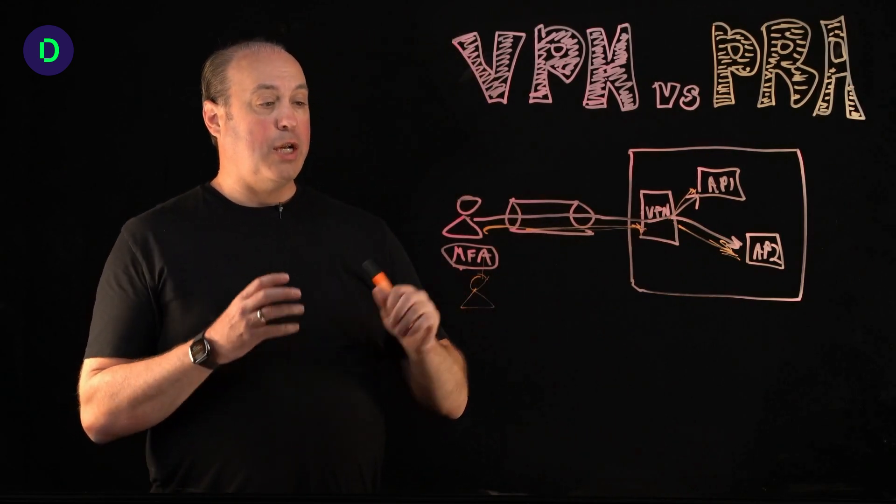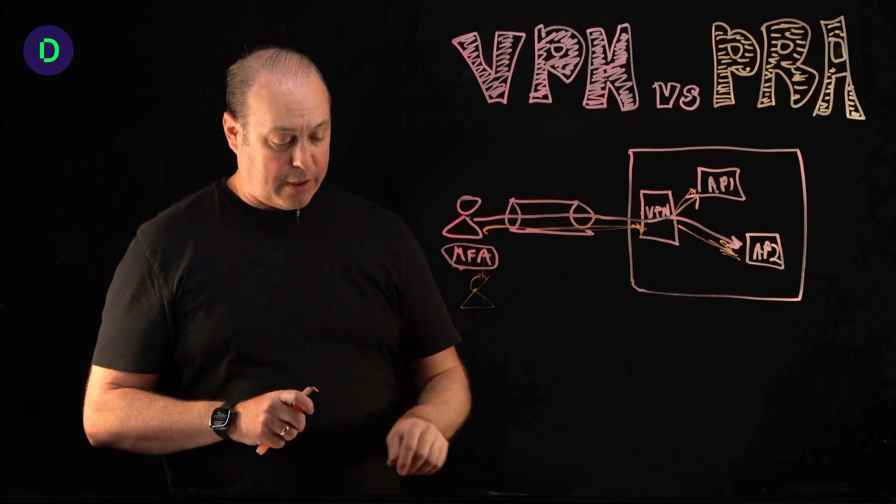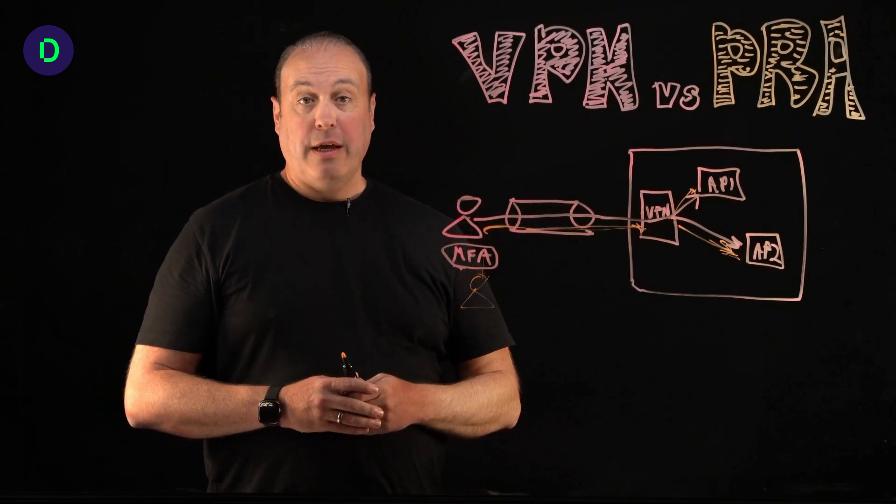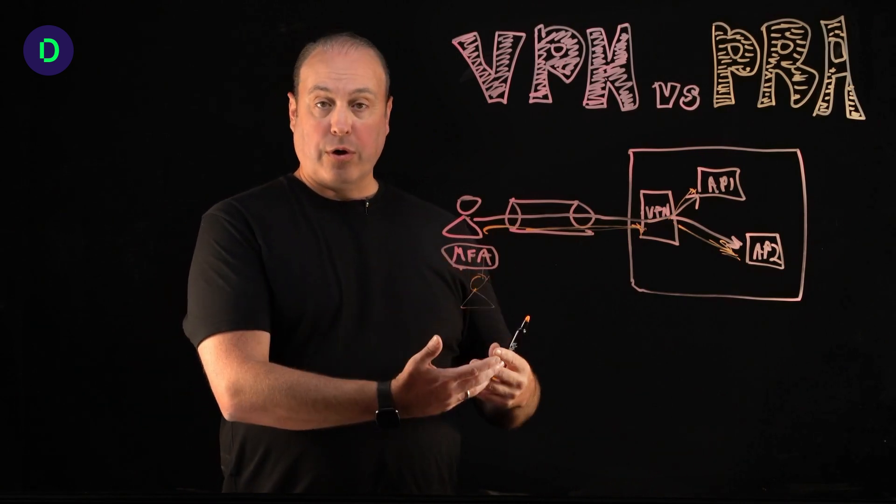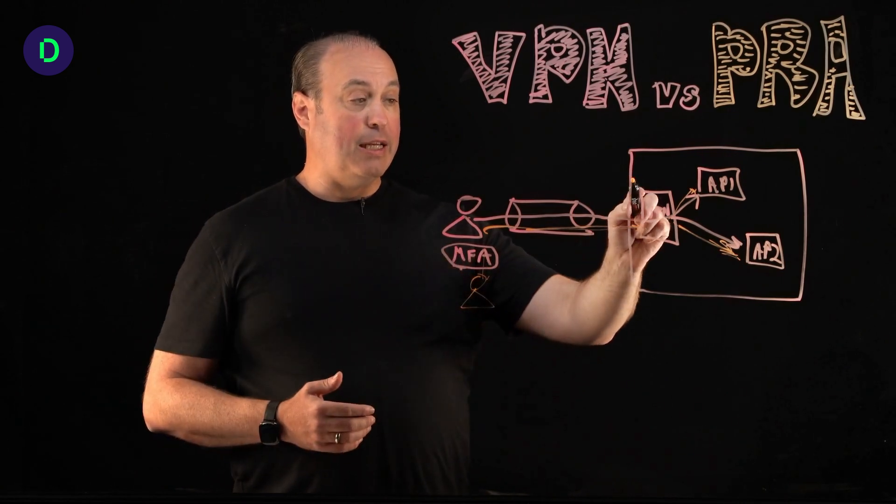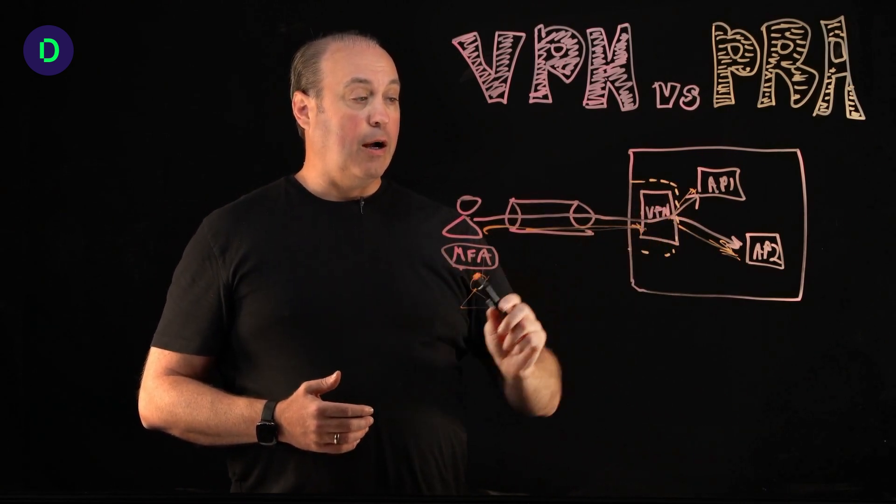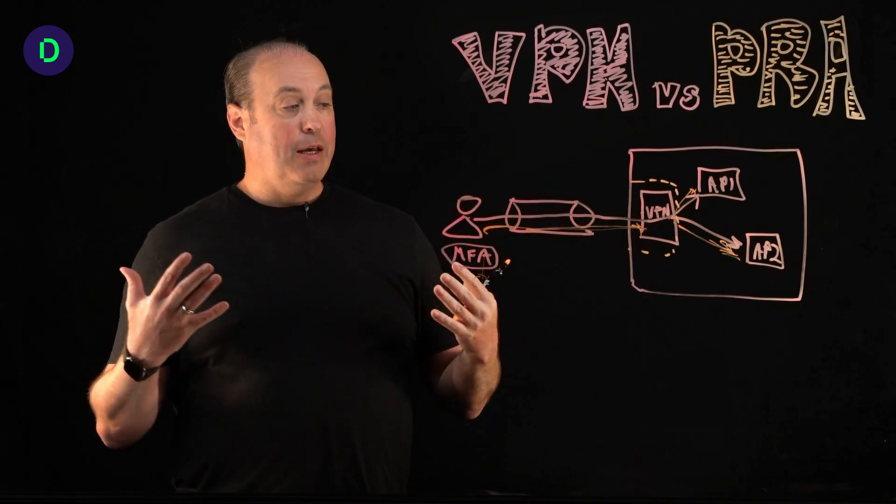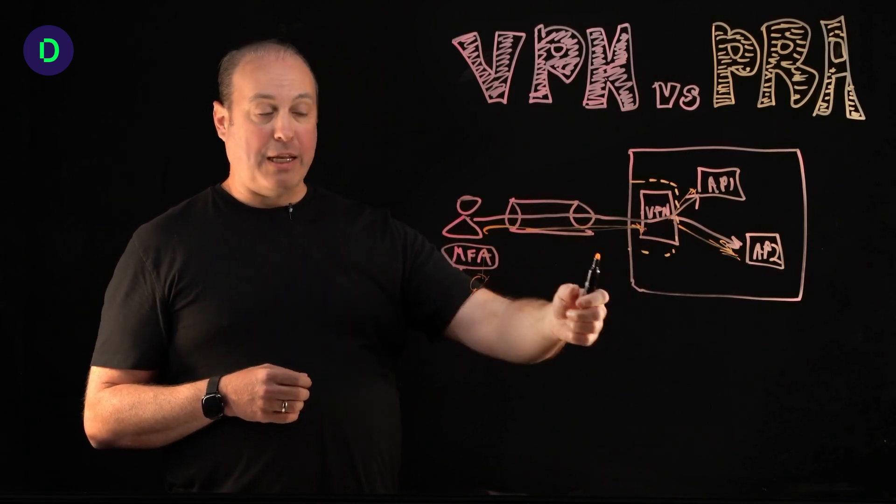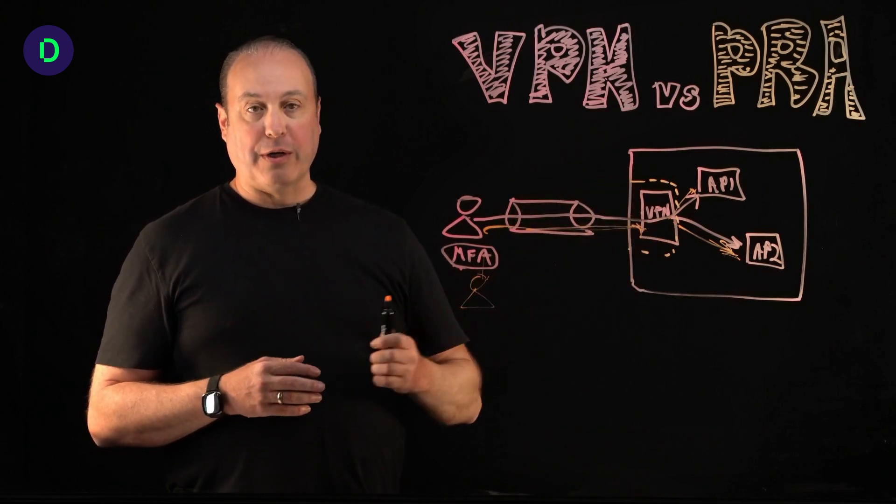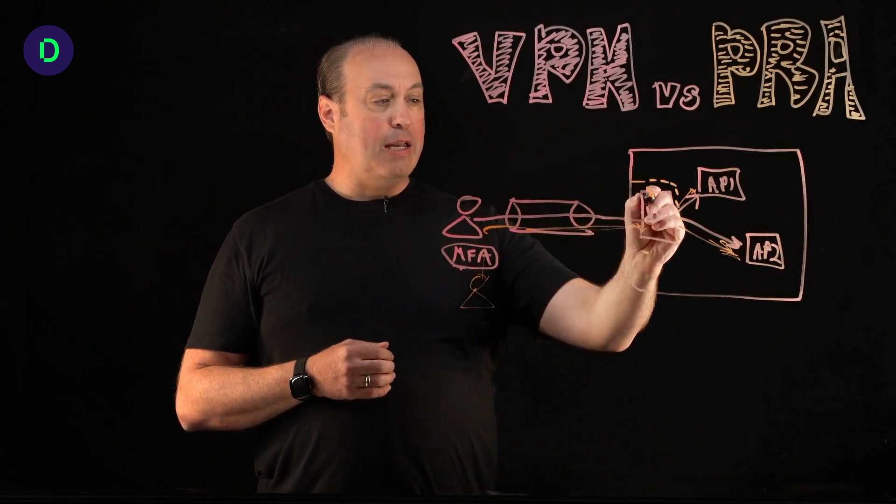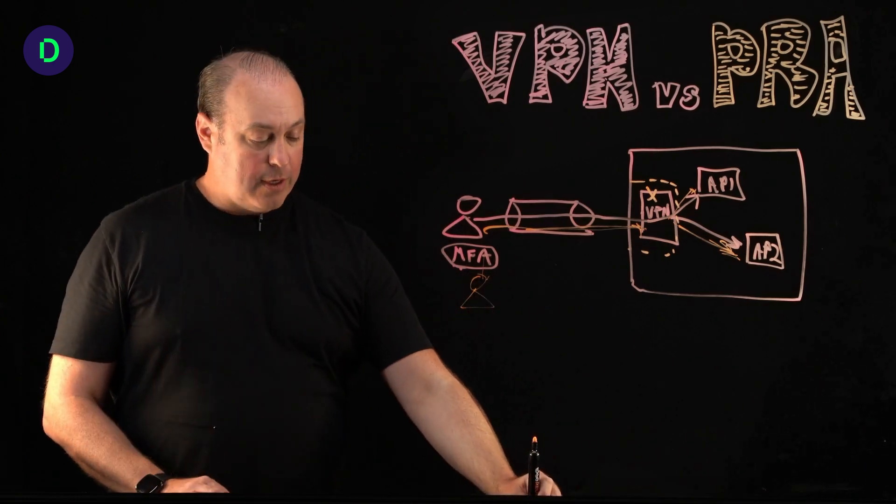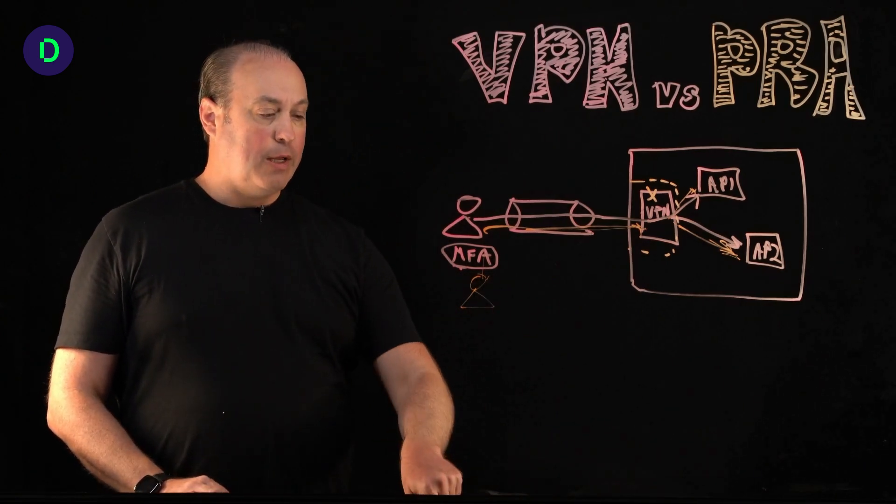The other challenge with a VPN situation here is that this VPN server, and sometimes it's a dedicated appliance, it needs to be secured. Remember, it's sitting kind of in that DMZ zone here, hanging out there between the internet and the enterprise. And it needs to be patched, updated, monitored, secured. And in a lot of cases, the VPN can be compromised, the actual server and appliance. So that has to be watched very carefully.